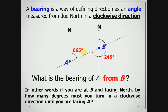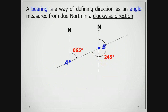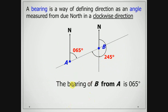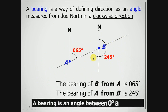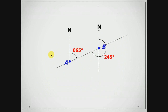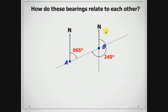I want you to pay attention to these two bearings. Notice that the bearing of B from A is 065 degrees, and the bearing of A from B is 245 degrees. You're probably wondering how we arrived at this 245 degrees — we're going to be looking at that shortly. Bear in mind that a bearing is an angle between 0 and 360 degrees, as was shown earlier on the cardinal points. How do these bearings actually relate to each other?